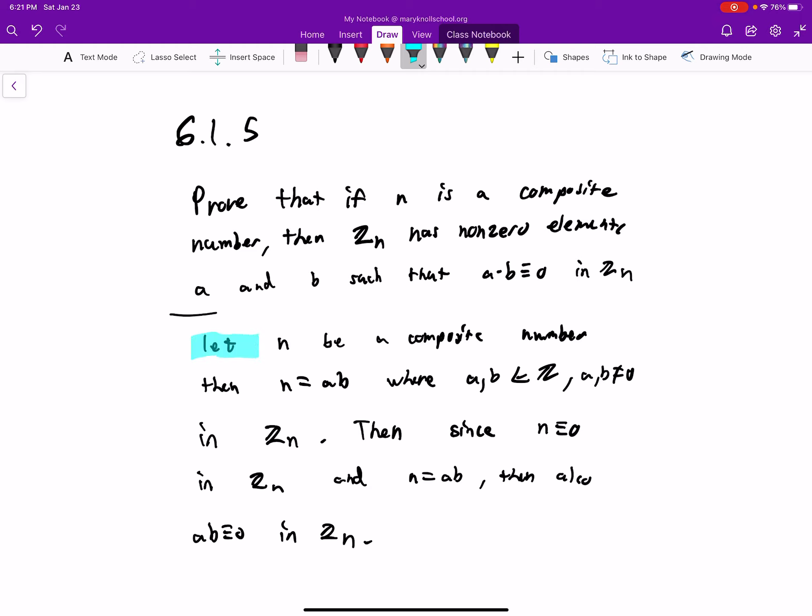First, let n be a composite number, and that means n equals a times b. There exists an a and a b in Z where a and b are not zero.